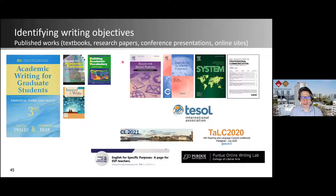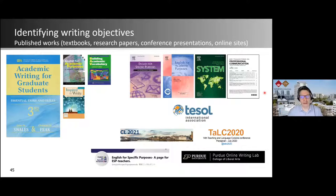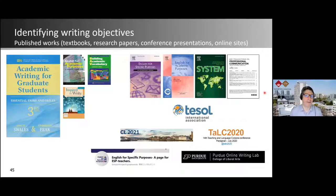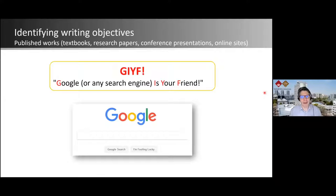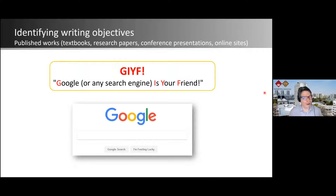All of these resources are fairly general — general academic English for academic purposes. If you're teaching a mechanical engineering, physics, or business student, you need to go beyond that. Google, or basically any search engine, is your friend. You can search and find example papers, example reports, and example materials to understand what the field looks like. Basically anything is on the internet now.